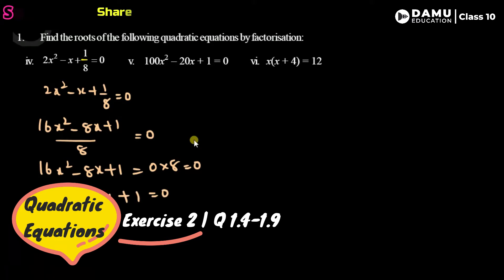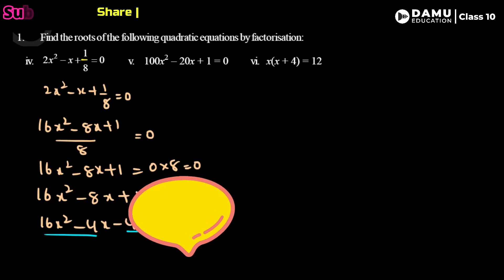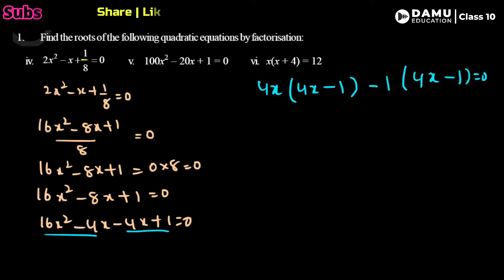Since 16 and 8 are present, we split the middle term: 4 × 4 = 16. So we write 16x² - 4x - 4x + 1 = 0. Grouping: take common factor 4x from the first group giving 4x(4x - 1), and take common factor -1 from the second group giving -1(4x - 1), since minus × minus = plus.